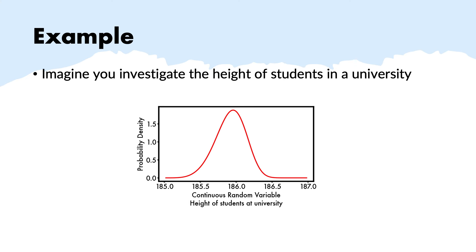Let me give an example to clarify the probability density function. Here I have the pdf of the random variable height of students at a certain university. We can see where most of the density of probability lies, which is around 186. We can investigate the probability in an interval — for instance, that students have a height between 185 and 186. It is always possible to get probabilities, but always in an interval, and it is always the area under the curve. The values of the curve themselves do not mean much.